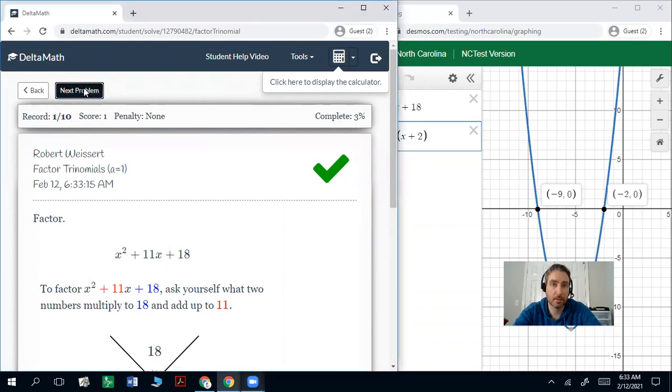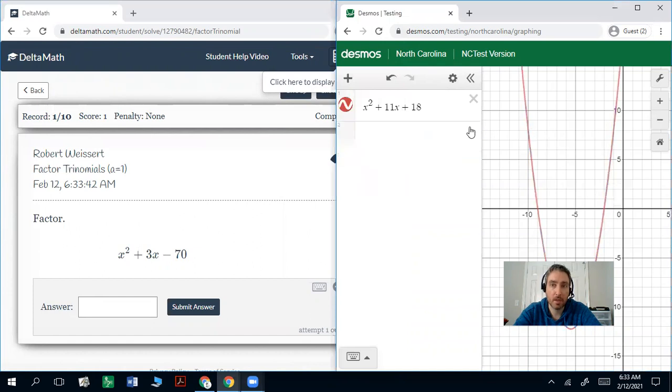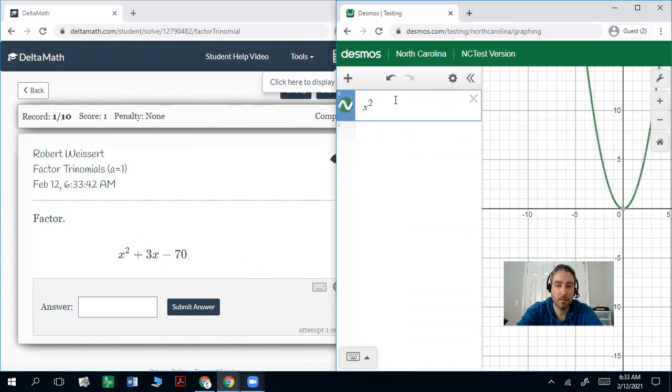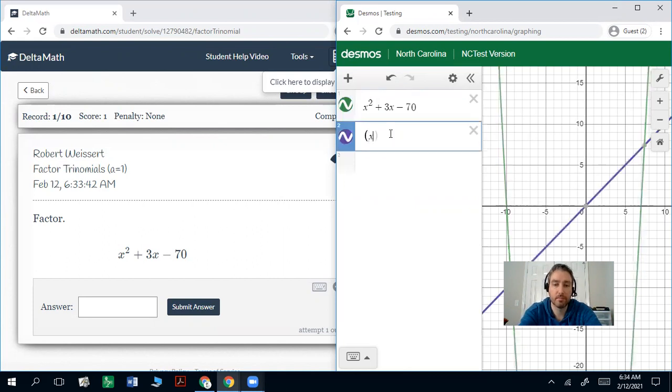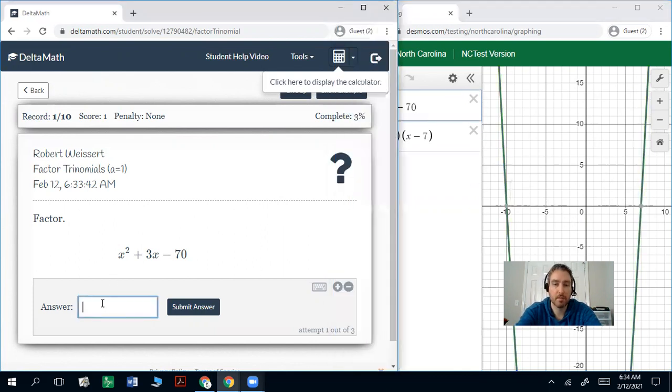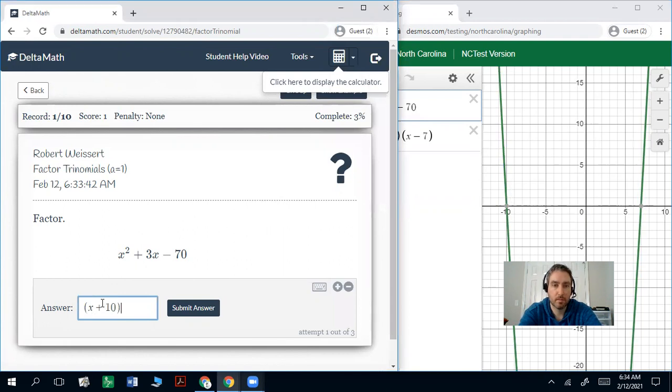So I'll do another one just to kind of emphasize it here. So I have x squared plus 3x minus 70. Get that ready and zoom out so you can see where it crosses. Negative 10, positive 7. So that means x plus 10, x minus 7. Those two give you the same graph as this. So that's your answer.